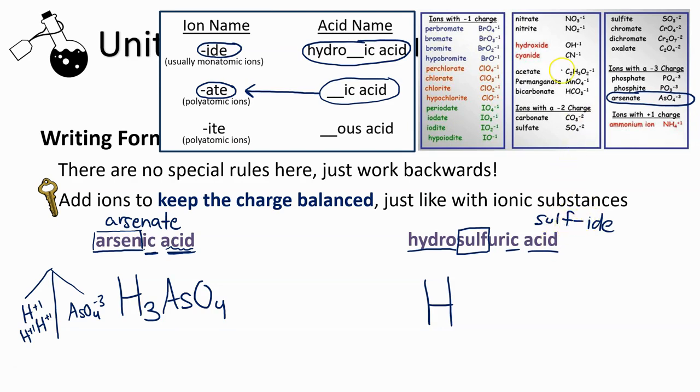Remember, you're not going to use your polyatomic ions list because -ide indicates that it's just a monatomic ion, a single atom. In this case, a single atom of sulfur. So I've got hydrogen bonded to sulfur.